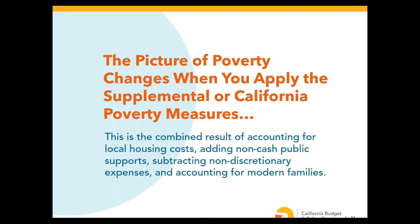Looking at poverty measures at the level of the California population — rather than individual families — the picture of poverty changes when you apply the supplemental or California poverty measures. This is a result of the combined differences: accounting for local housing costs, adding non-cash public supports, subtracting non-discretionary expenses, and accounting for modern families.